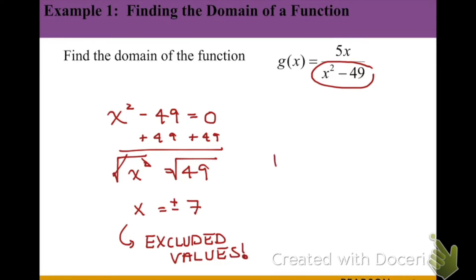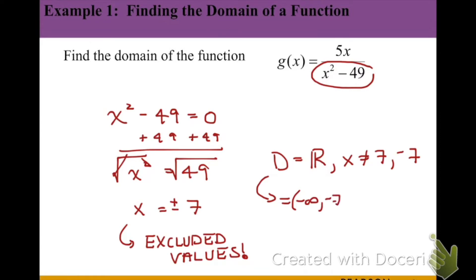We can write the domain of this function as all real numbers except x cannot be 7 or negative 7. Another way of writing that would be in interval notation: from negative infinity to negative 7, union negative 7 to positive 7, union 7 to positive infinity. These unions along with the parentheses mean that we skip over the actual values of negative 7 and 7 as we move across the number line.